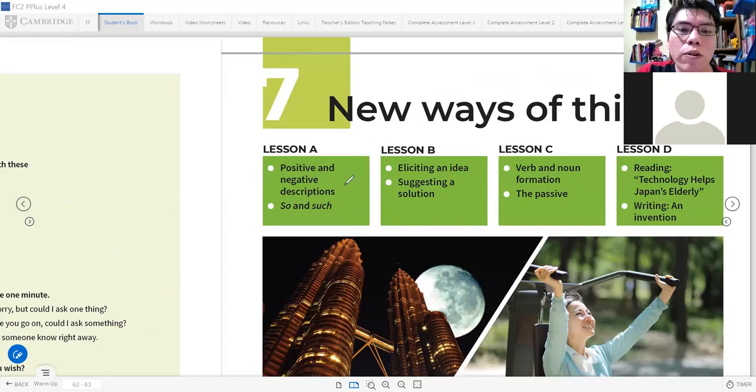In this unit, we are going to learn positive and negative descriptions, how to use so and such, how to elicit an idea, how to suggest a solution, verbal and noun formation, the passive, and we are going to read about how technology helps Japan's elderly. And if we have time, we are going to write about an invention. So this is what we are going to see in this unit.